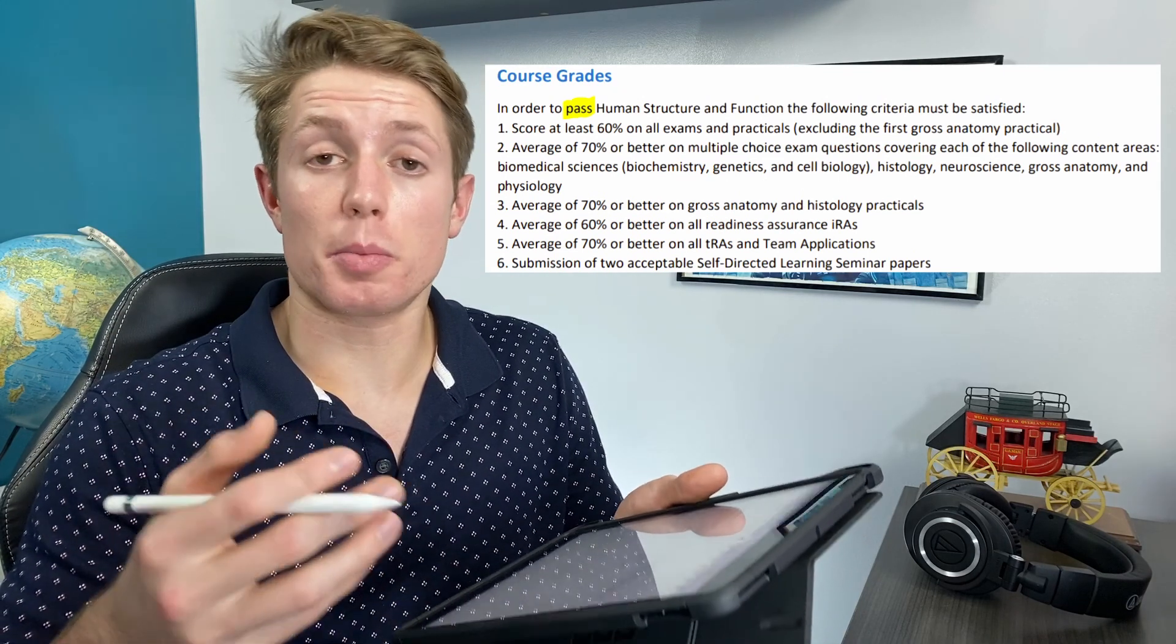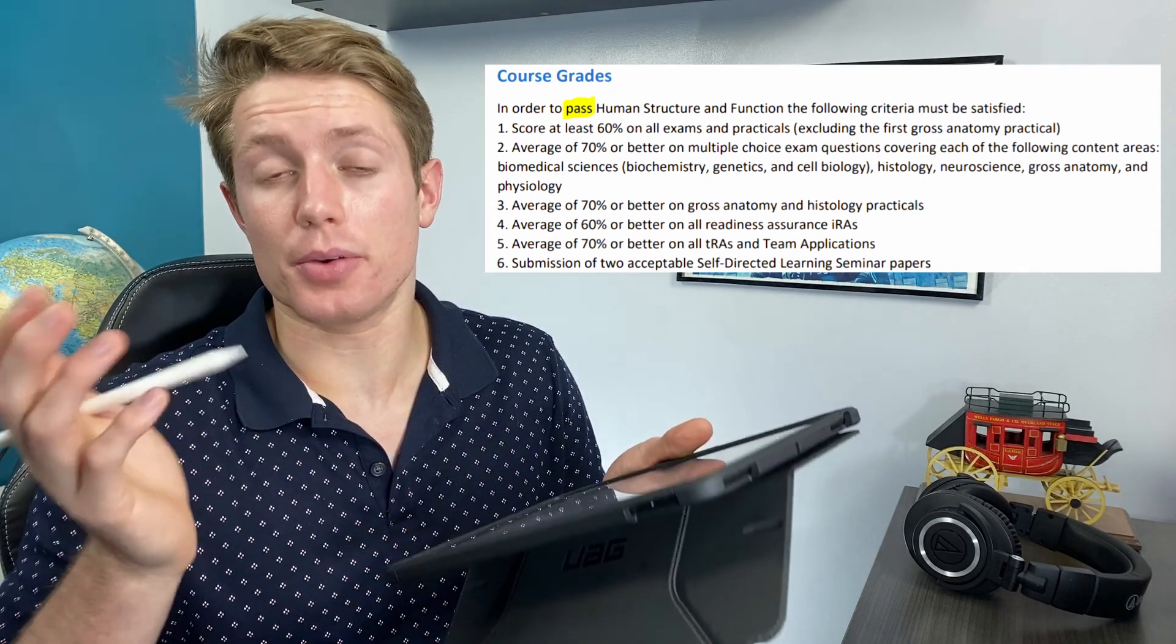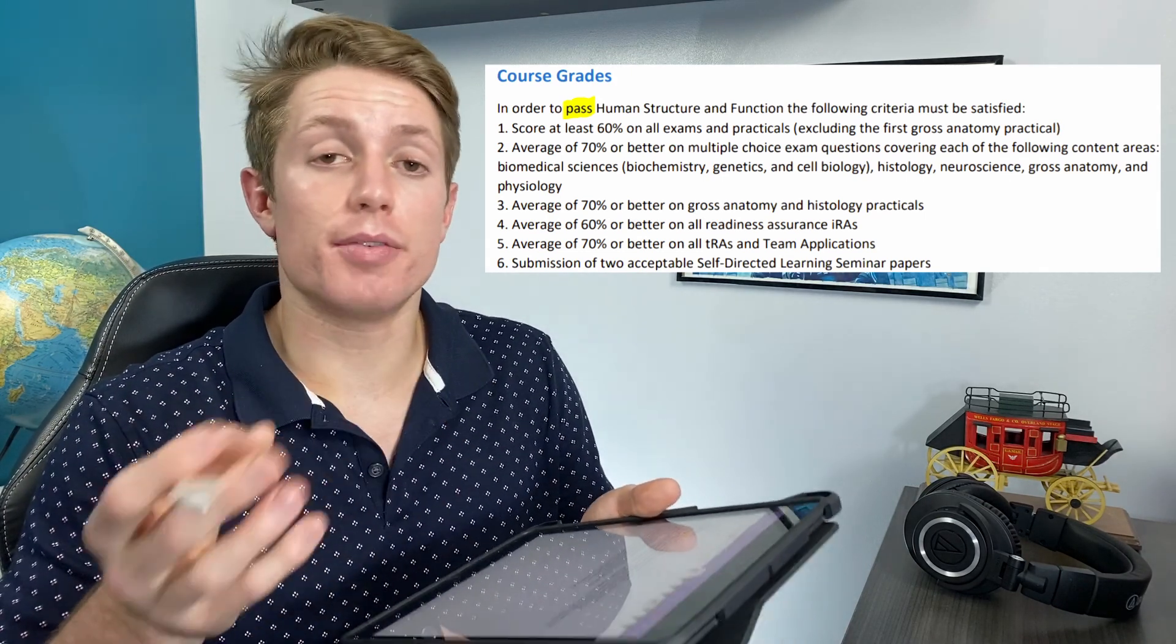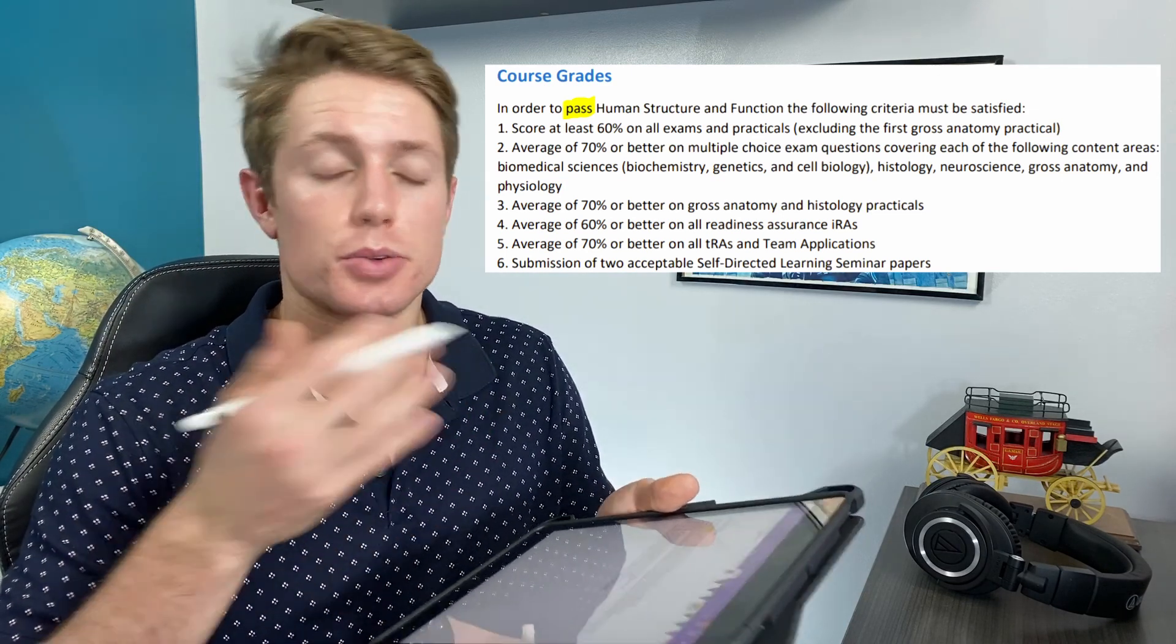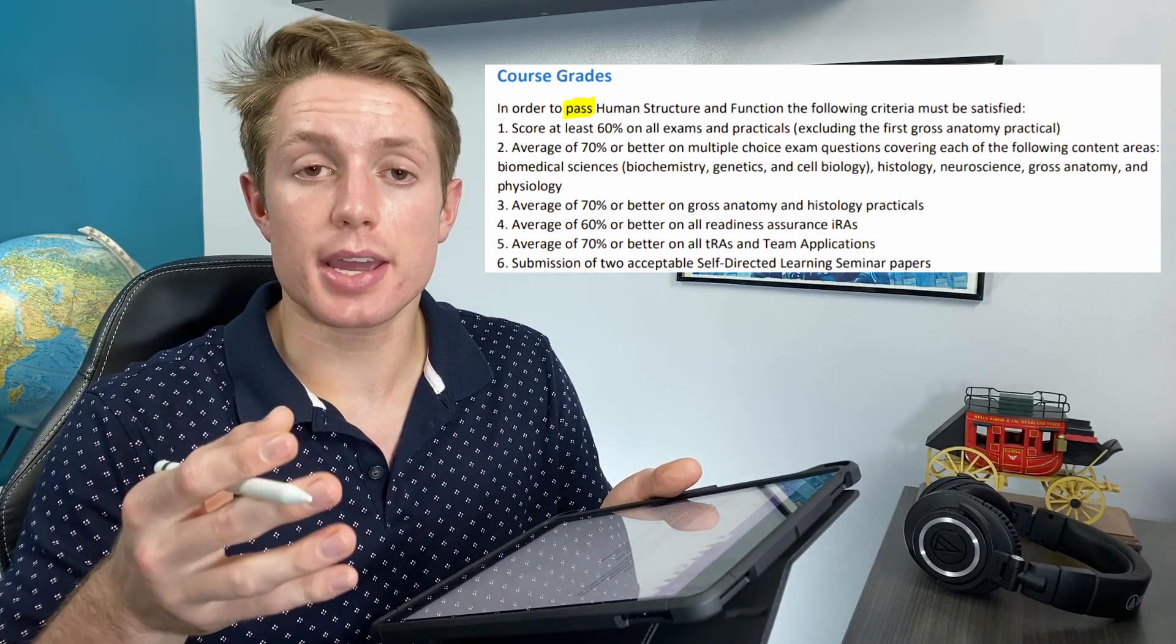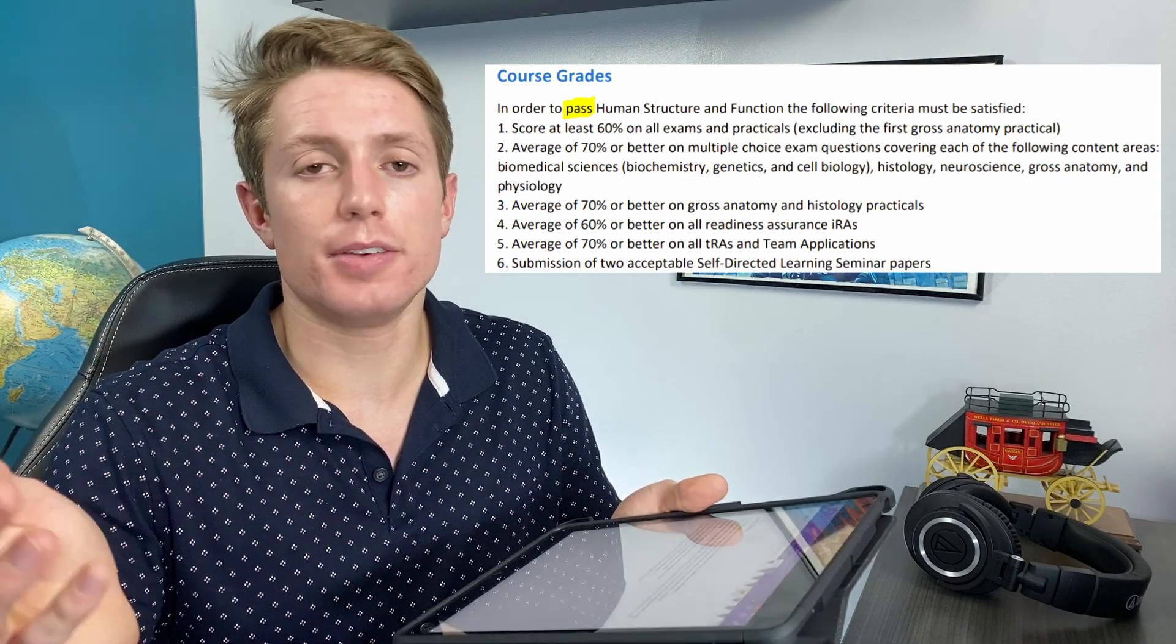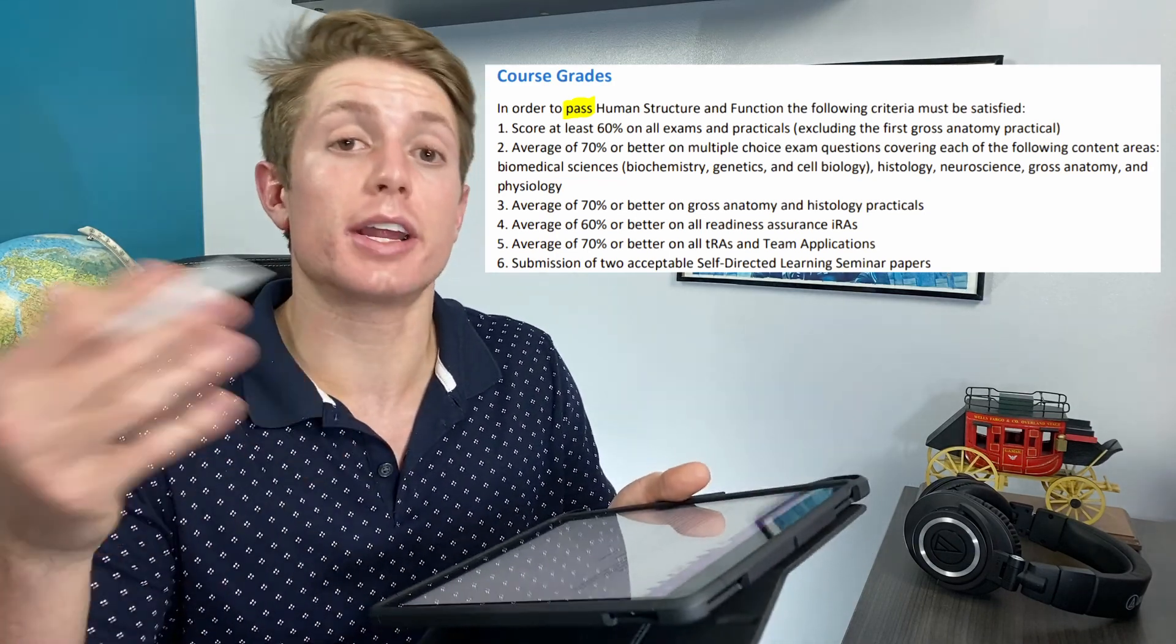And then the next category, number four, is averaging a 60% or better on all of our IRAs, which is individual readiness assurance. Throughout the semester we have different times where, as a method of learning, you sort of learn by doing it. It's like a flipped classroom thing. You take this IRA first and you take it by yourself. It's like 15 questions, multiple choice. You don't really have to study for it, but you have to do some learning to prepare for it.